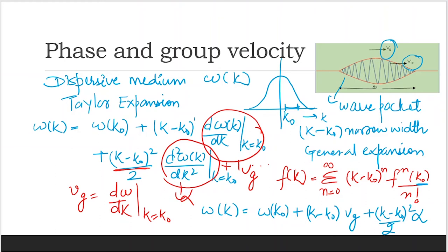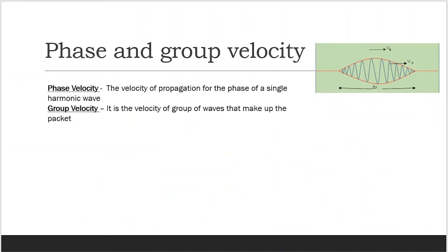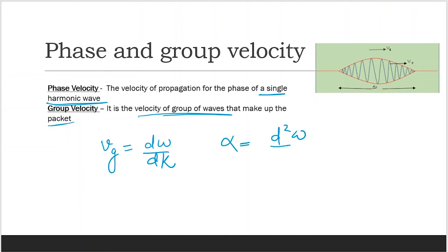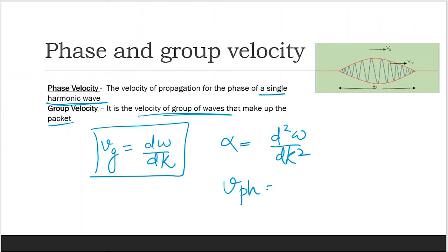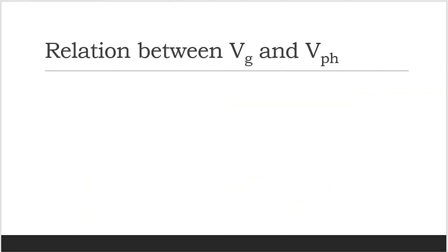By definition, phase velocity is the velocity of the phase of a single harmonic wave, and group velocity is the velocity of the group of waves forming the wave packet. So vg equals d-omega/dk, and alpha equals d-squared-omega/dk-squared. Phase velocity is omega divided by k.